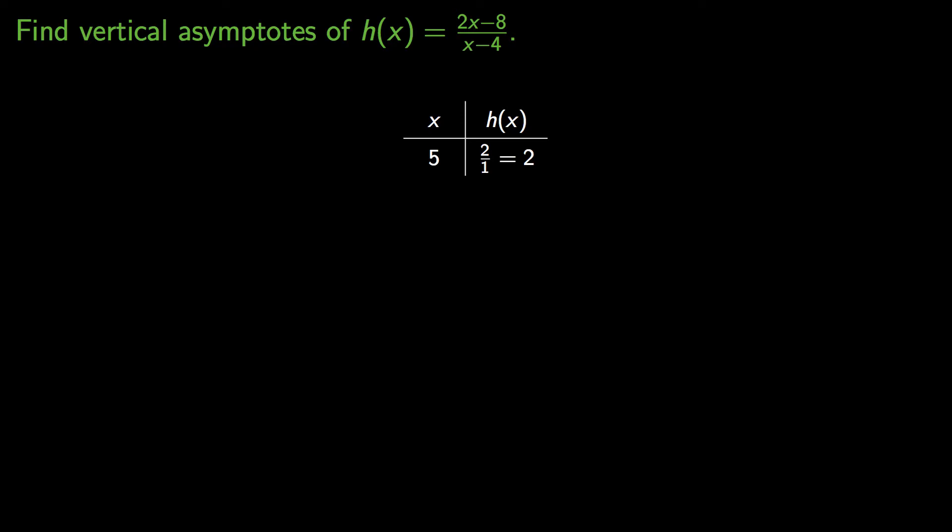So I need to start pretty close to 4, bigger than 4, and then I need to choose x values to get closer and closer to 4 so they'll actually get a little bit smaller. When I plug in the number 5, I actually get 2 over 1, which is 2. When I plug in 4.5, I get the y value of 2 again.